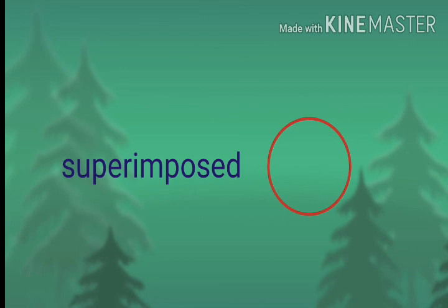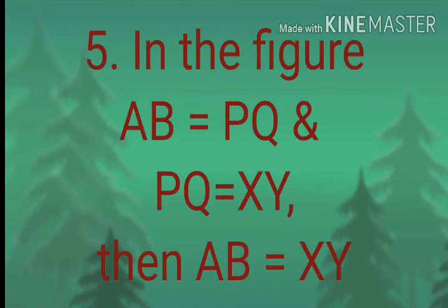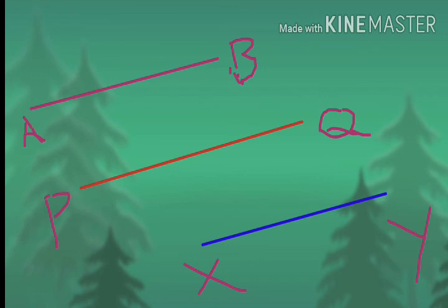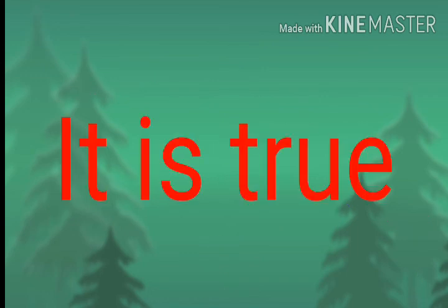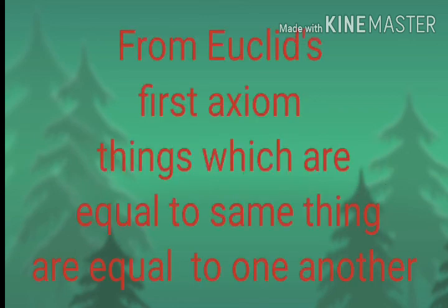The last sub-question: in the figure, if AB equals PQ and PQ equals XY, then AB equals XY. That is true. Given AB equals PQ and PQ equals XY, from Euclid's first axiom, which states that things which are equal to the same thing are equal to one another, we can conclude AB equals XY.